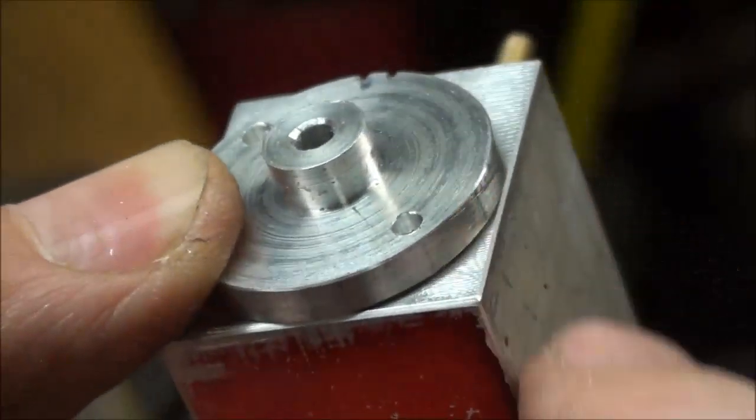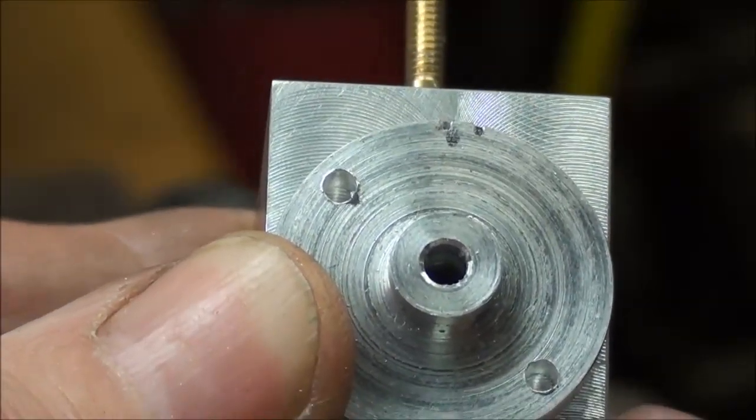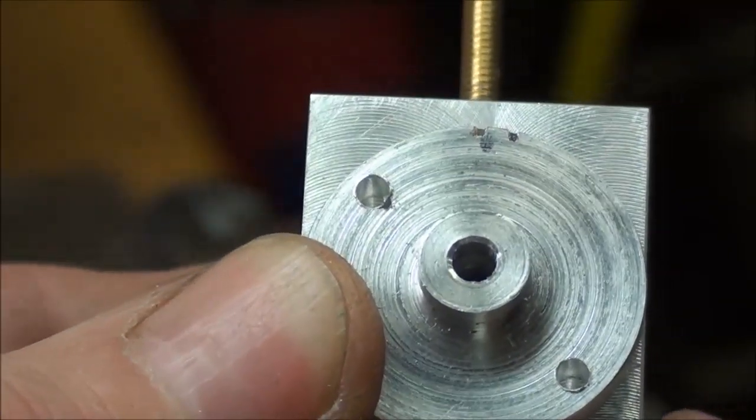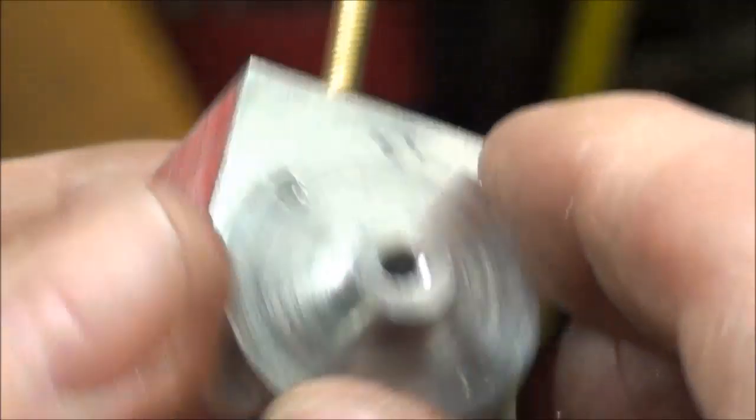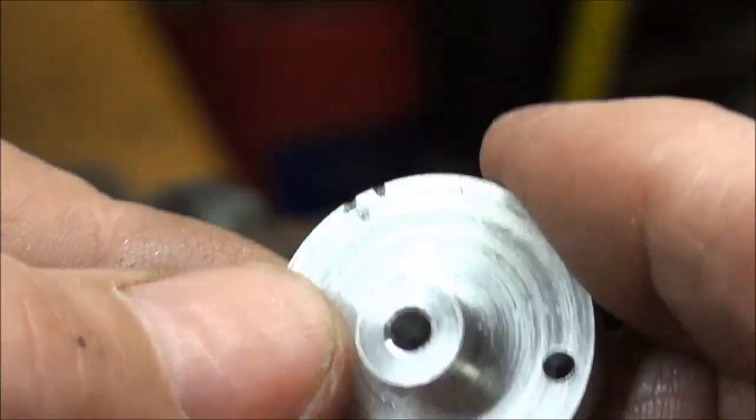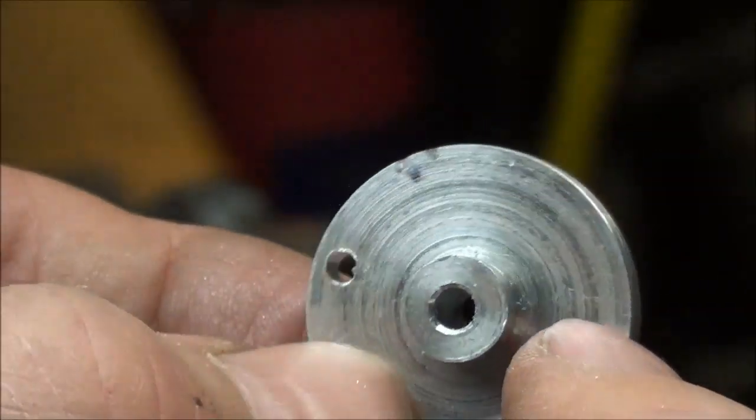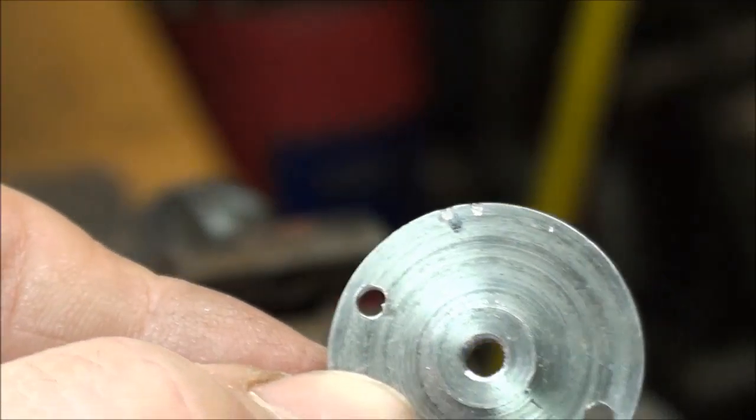I'll drill down into the cylinder about 3/8 inch deep, then tap them, and then the clearance holes drilled in here and it's ready to screw on.